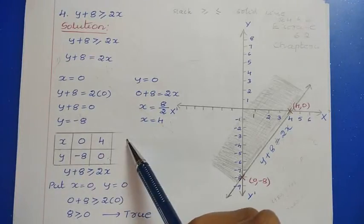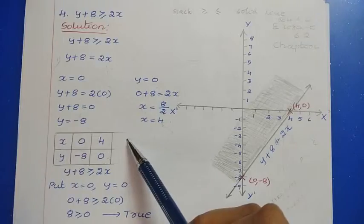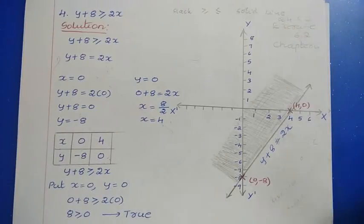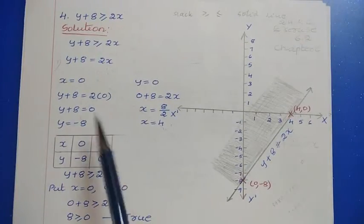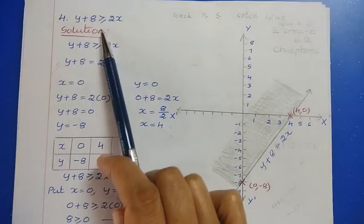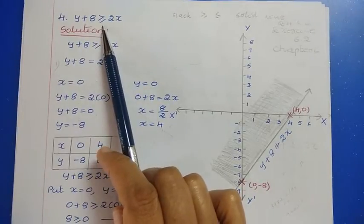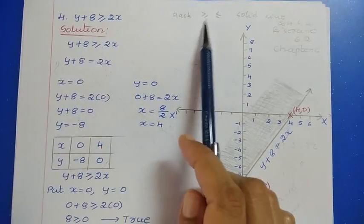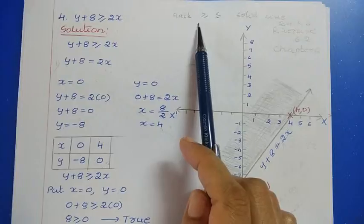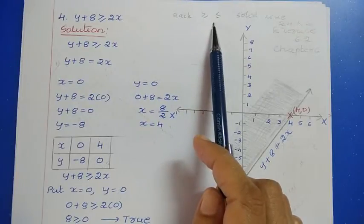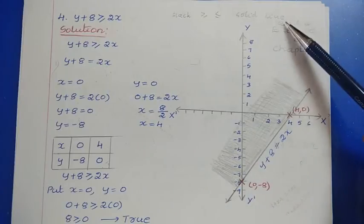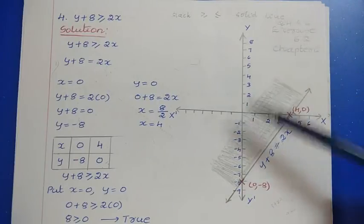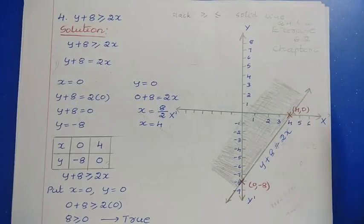Based on these points you can draw a graph. First, we have to decide whether to draw a dotted line or a solid line by looking at the type of inequality. This is a slack inequality with greater than or equal to, so we use a solid line.